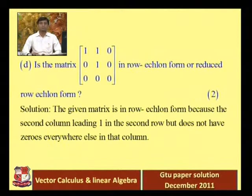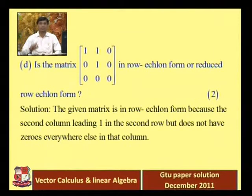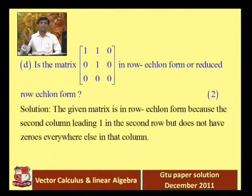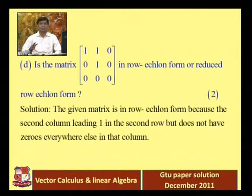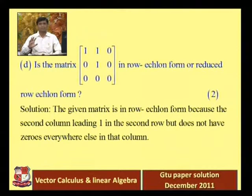However, the condition for reduced row echelon form — that all elements above and below a leading entry in its column must be zero — is not satisfied, since the second column has a 1 above the leading entry in row 2. Therefore, the given matrix is in row echelon form but not in reduced row echelon form.